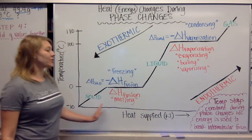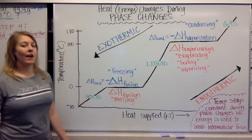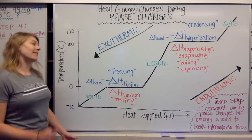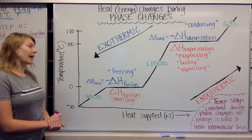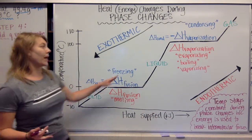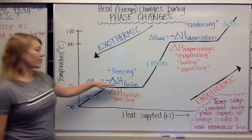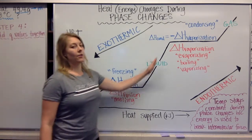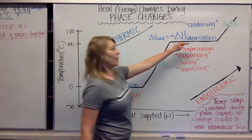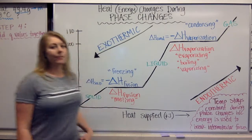Across the x-axis we have the heat supplied in kilojoules. As you're moving to the right across the graph you have heat supplied. Now, what you notice in the black line is we have increasing temperature, then we flatline, increasing temperature, then we flatline, then increasing temperature again.